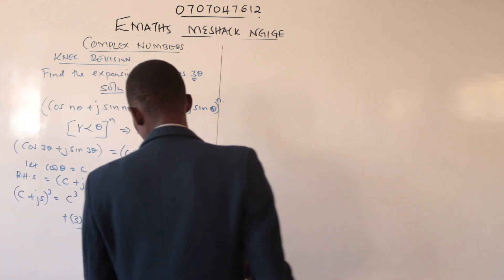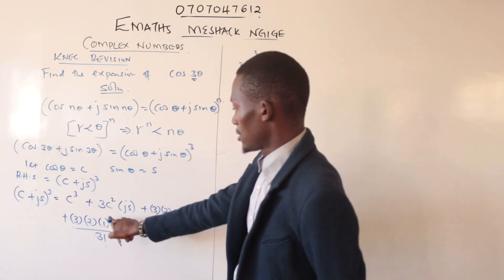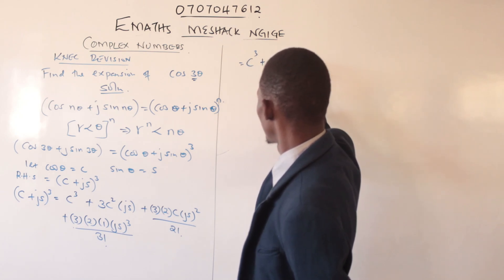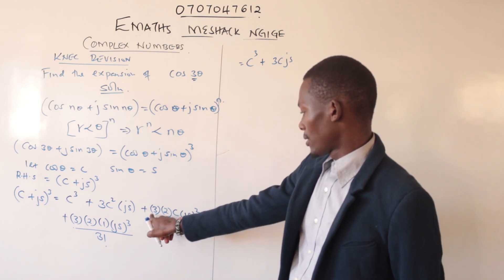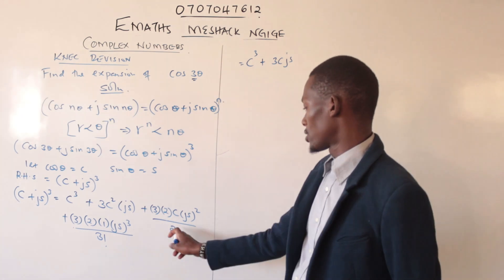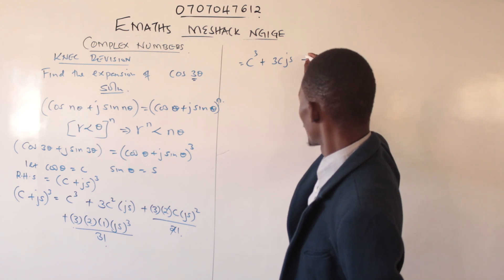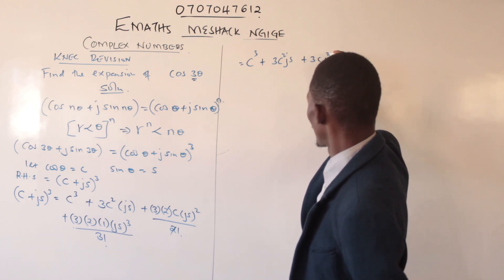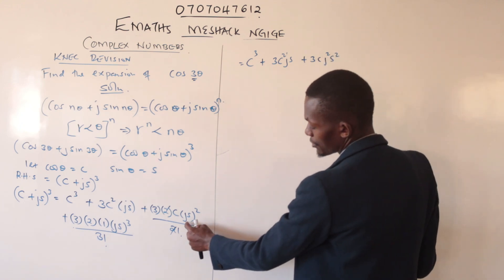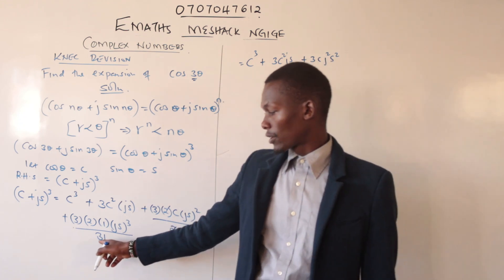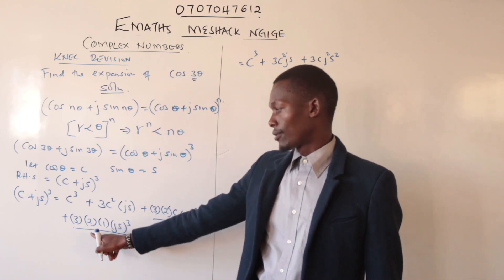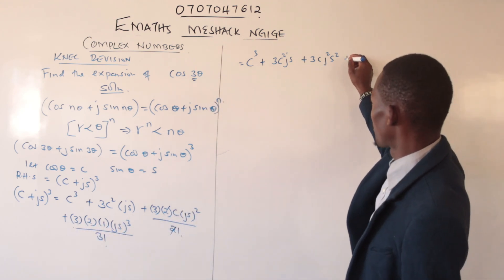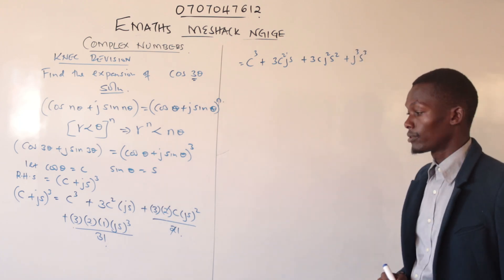Simplifying, we have c³ plus 3c(js) plus the next term: 3 times 2 divided by 2 gives 3, so we have 3c²(js)², and then 3 factorial over 3 factorial cancels completely, leaving us with j³s³.